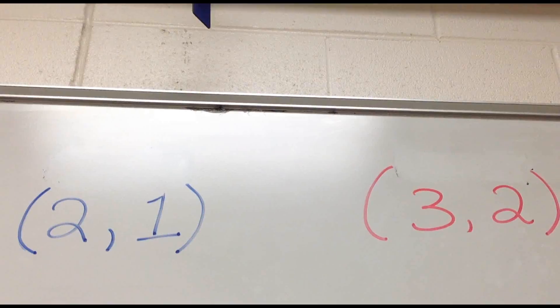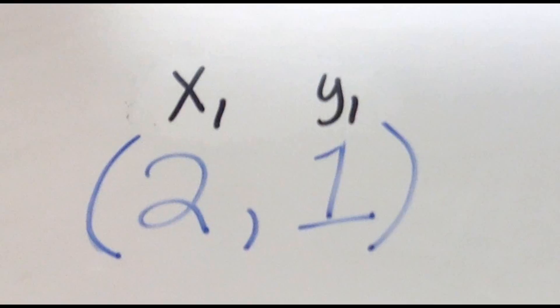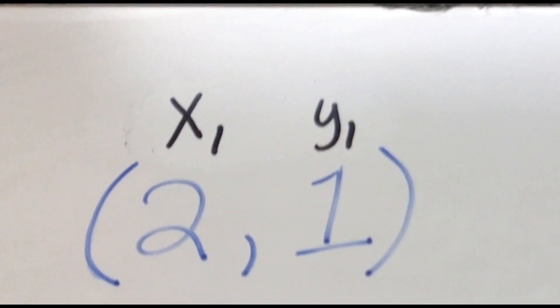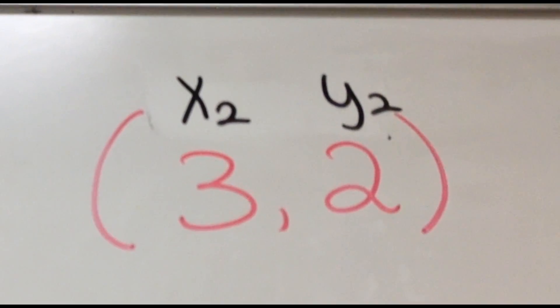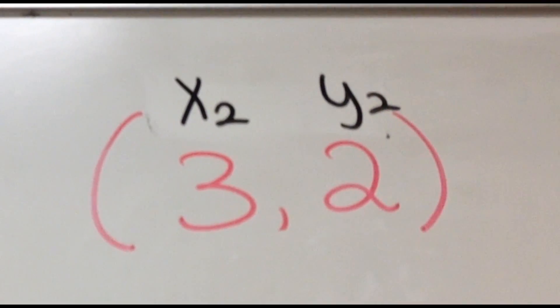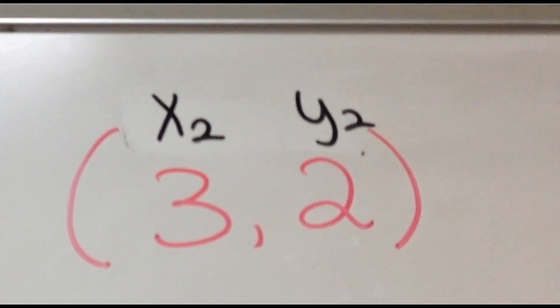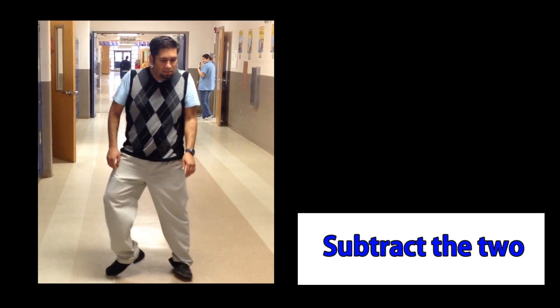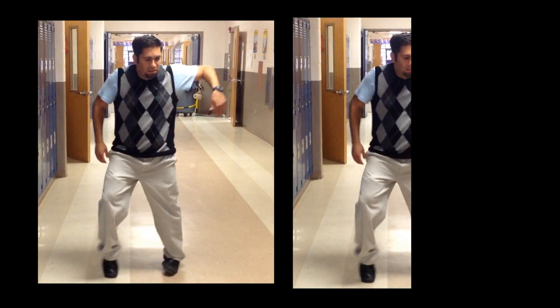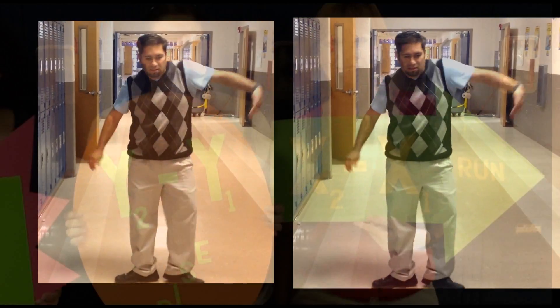Formula style. You take a point, label it x1 and y1. Take a second point, label it x2 and y2. You subtract the two. The y's will give you the rise. The x's give you the run. This is called the slope.